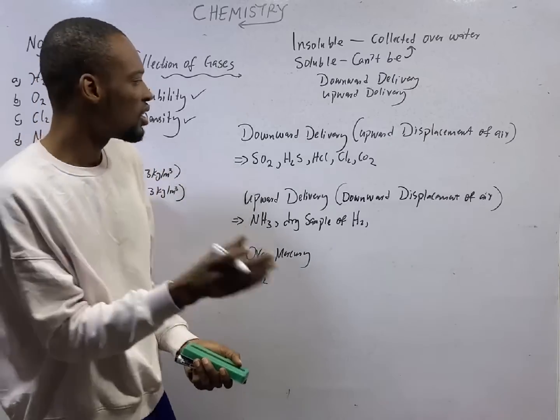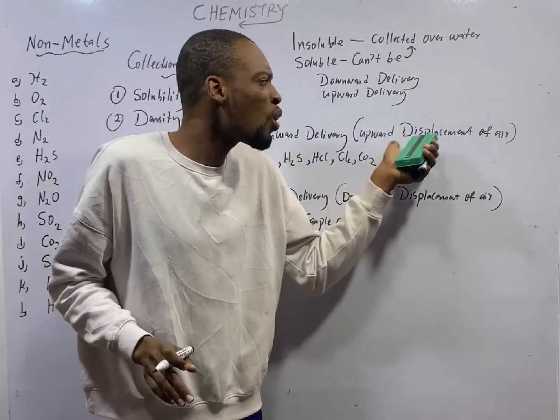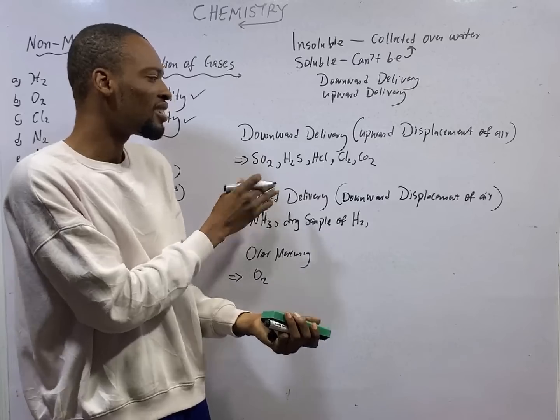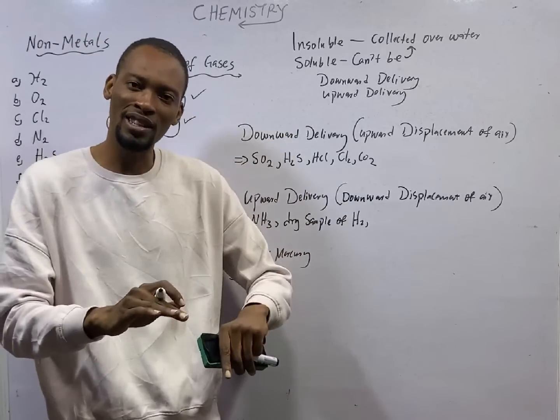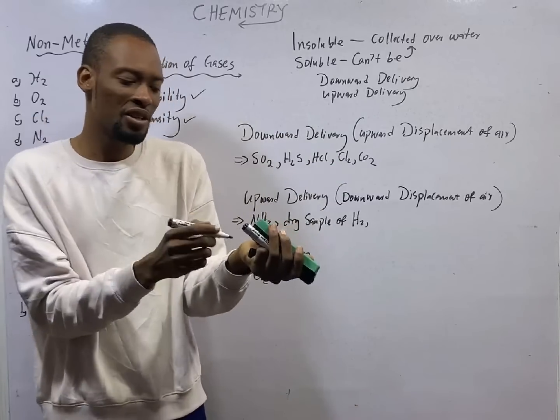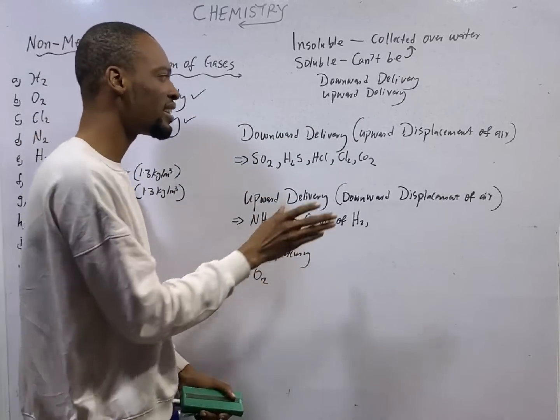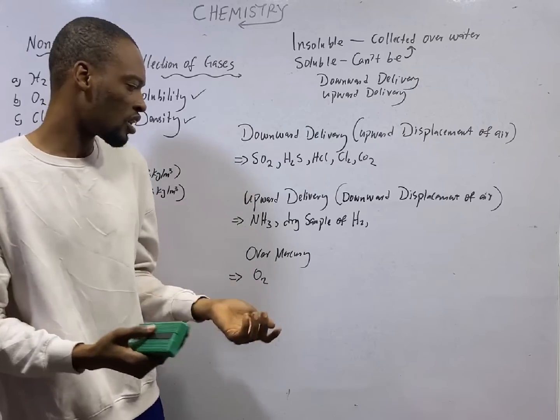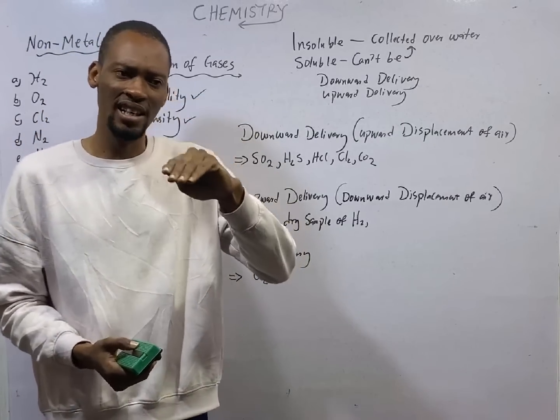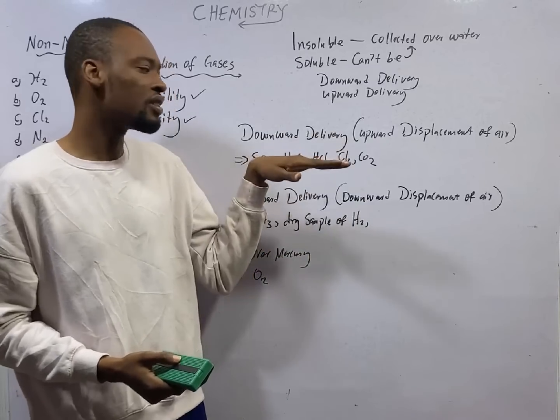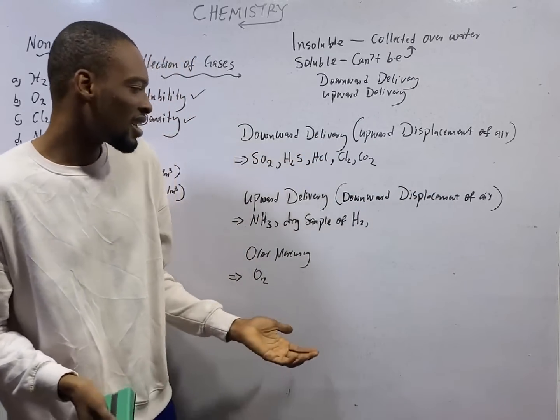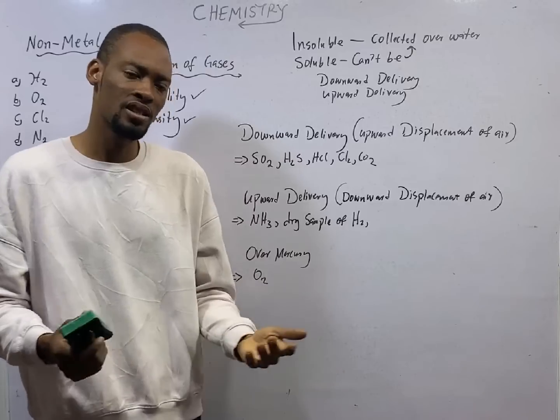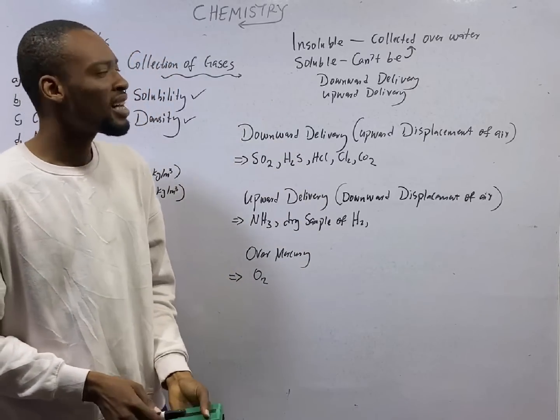Take note, downward delivery is also referred to as upward displacement of air. You see, like the opposite, upward delivery is downward displacement of air. Downward delivery is upward displacement of air, which implies that gases that are denser than air are collected by downward delivery or upward displacement of air. Gases that are less dense than air are collected by upward delivery or downward displacement of air. And examples of such gases are ammonia gas (NH3) and dry samples of hydrogen gas (H2).